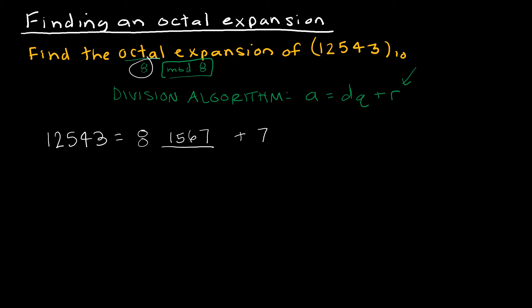Then I'm going to take the quotient 1,567 and I'm going to repeat the process. 8 times what? Well, 8 times 195 with a remainder of 7 would be equal to 1,567.